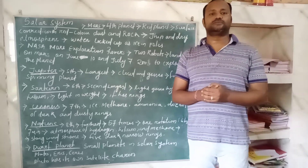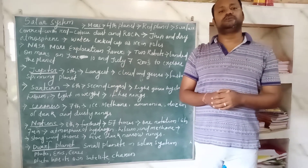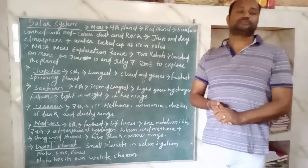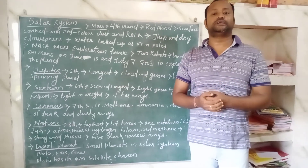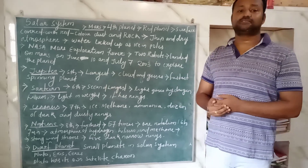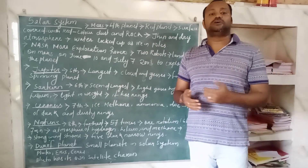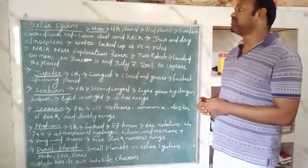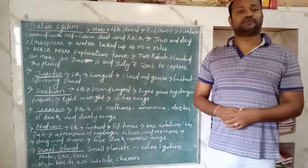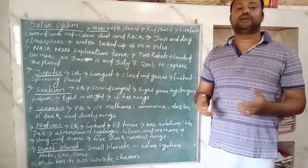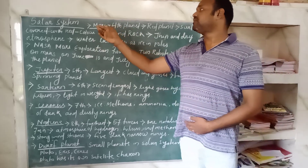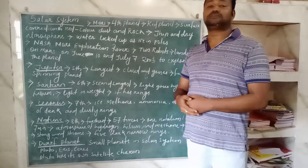Good morning students. Today we are going to read about Earth in the solar system. In this chapter we have already discussed about the three inner planets up to Earth. Today we are going to discuss about the solar system and about the planet Mars. This chapter belongs to class 6.